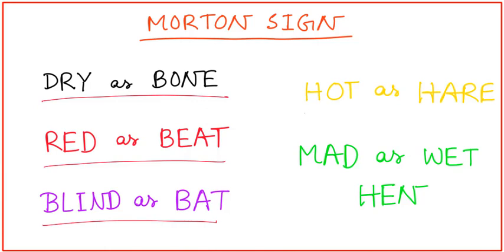And due to stimulation of heat regulation center, it is called hot as hare. And as the person becomes restless and confused and utters indistinct words, it is called mad as wet hen.